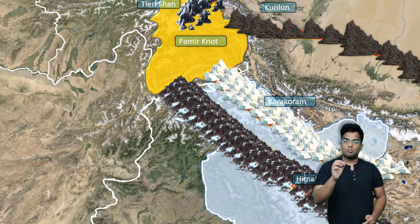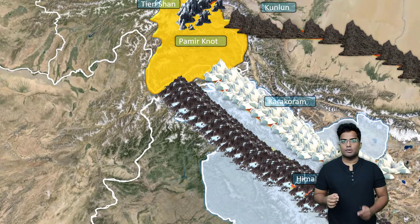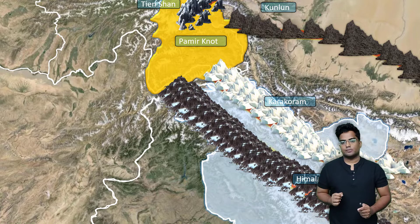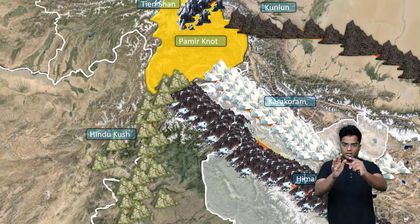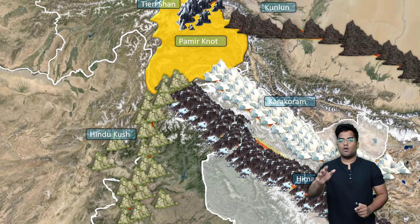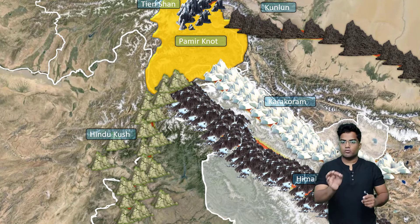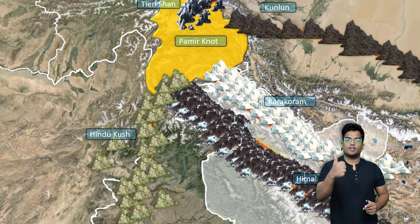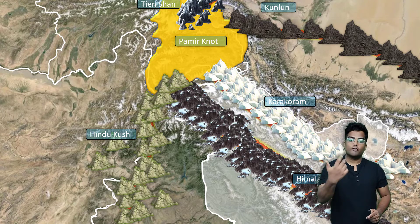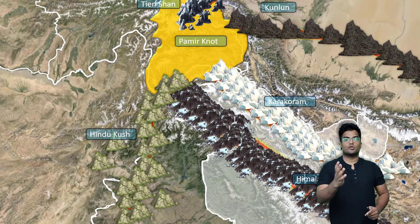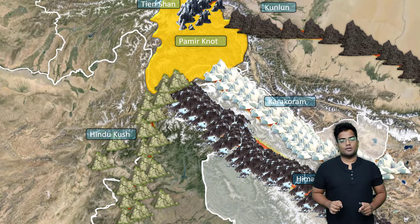We have one more mountain range which basically acts as a boundary between Afghanistan and Pakistan — that is called Hindu Kush. All these mountain ranges converge at one place called Pamirnaut: Tianshan, Kunlun, Karakoram, Himalayan ranges, and Hindu Kush — all converging at Pamirnaut.